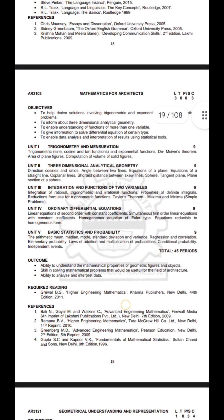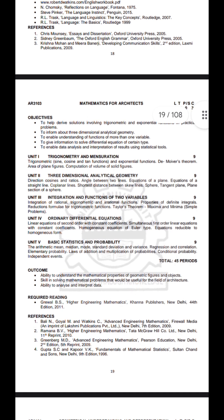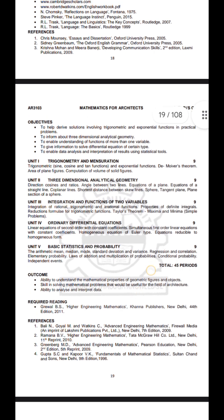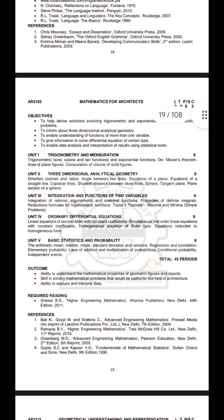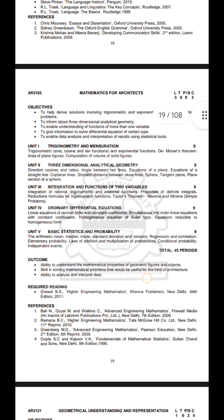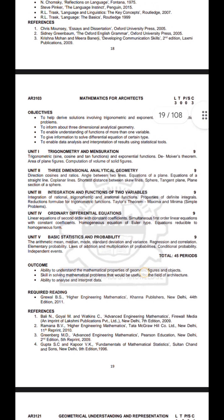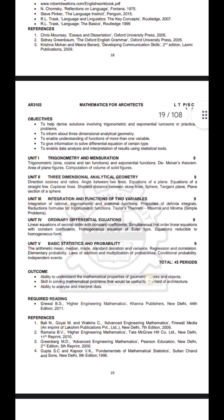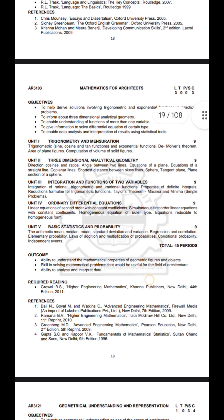Three-dimensional analytical geometry covers direction of cosines and ratios of a line, equation of a plane, equation of straight lines, co-planar lines, shortest distance between skew lines, sphere, tangent plane, and plane section of spheres.